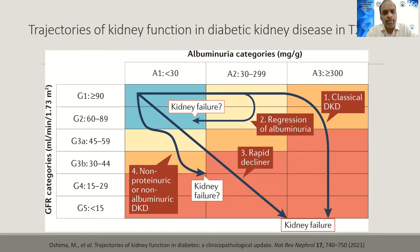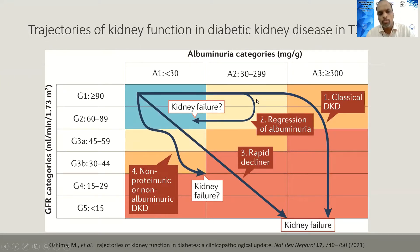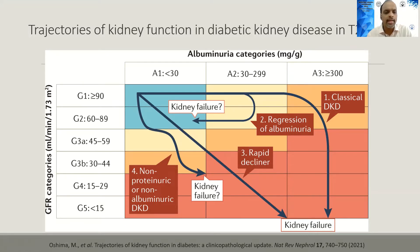In type 2 diabetics, different trajectories of renal decline are increasingly recognized. The classical pathway progresses from normoalbuminuria to microalbuminuria to macroalbuminuria, followed by a drop in GFR. However, some patients regress from microalbuminuria, some have rapid GFR decline without going through albuminuria stages, and some have slow steady GFR decline without significant proteinuria. There is significant heterogeneity among type 2 diabetics in their rate of GFR decline.